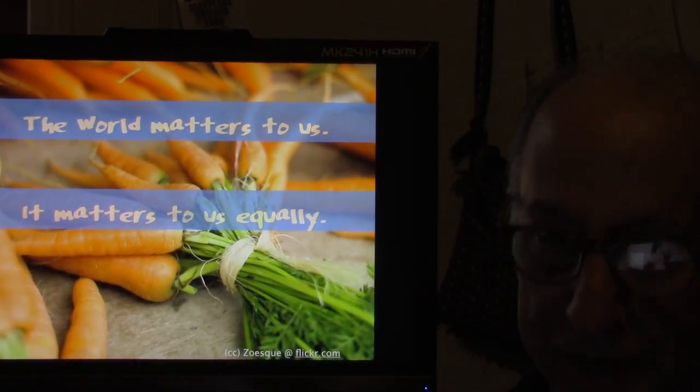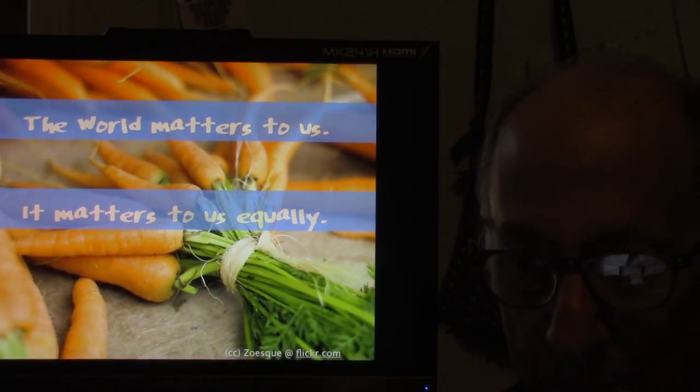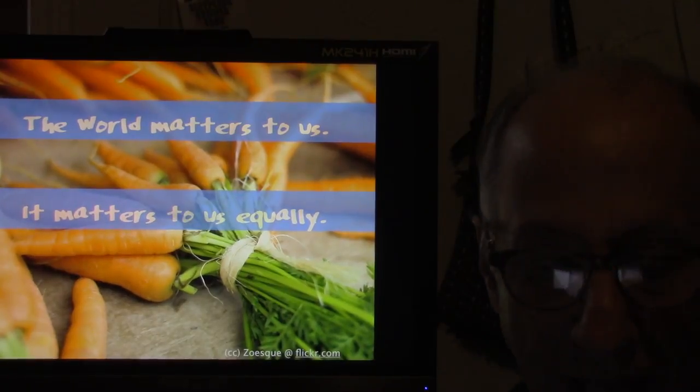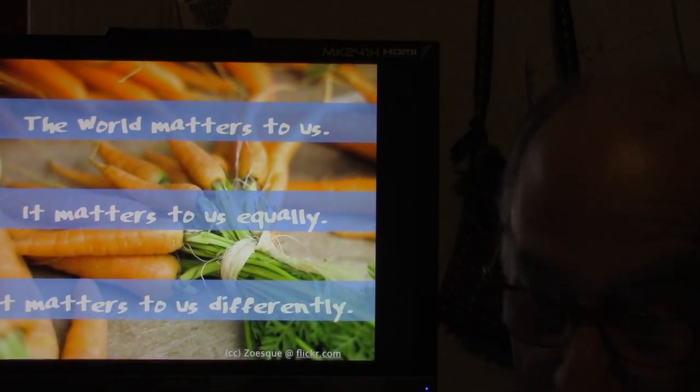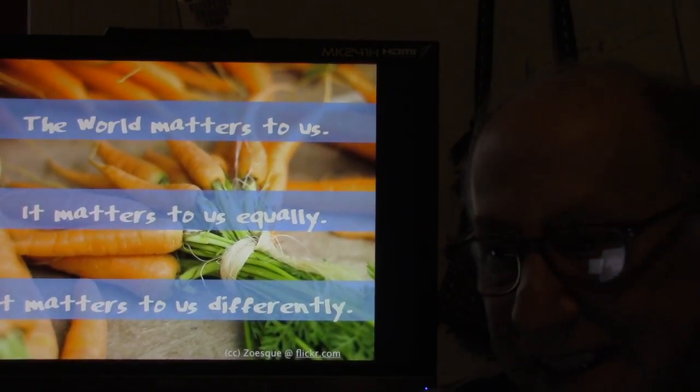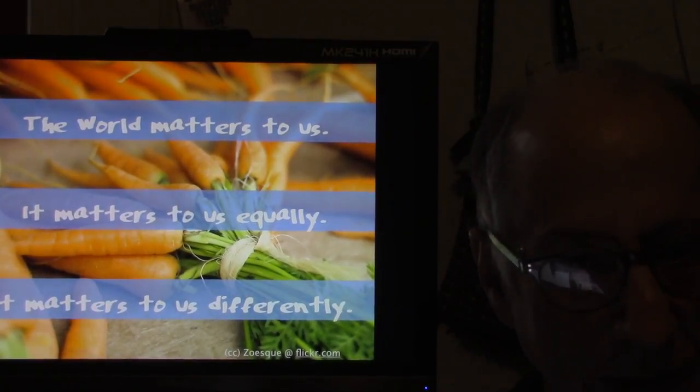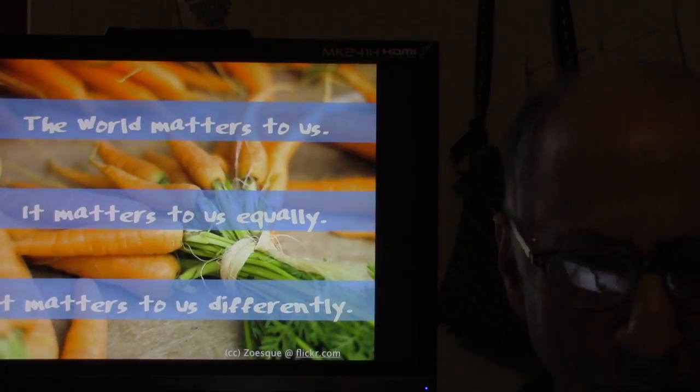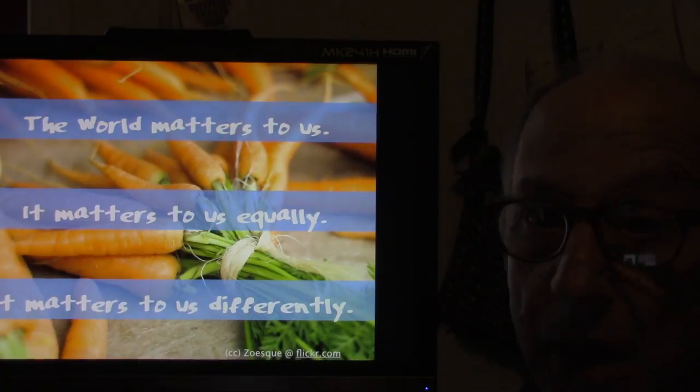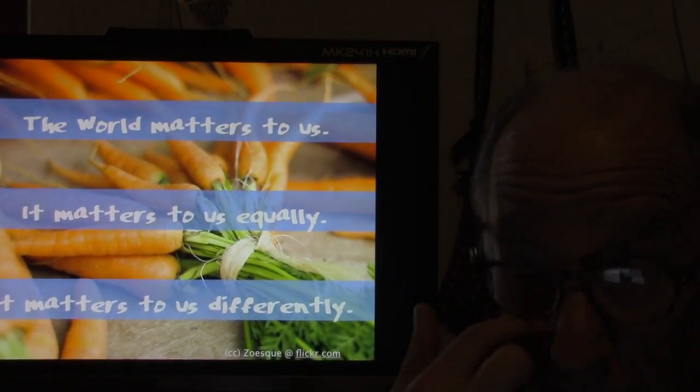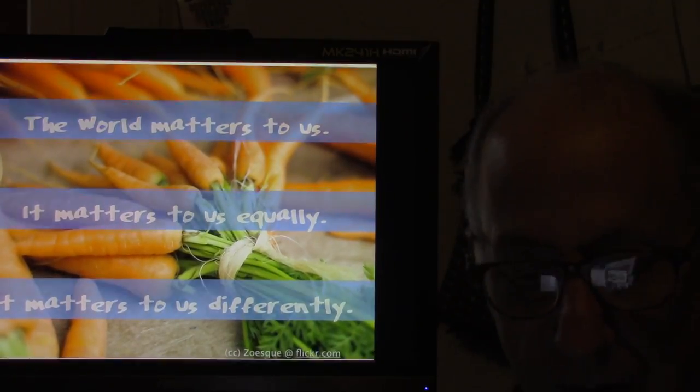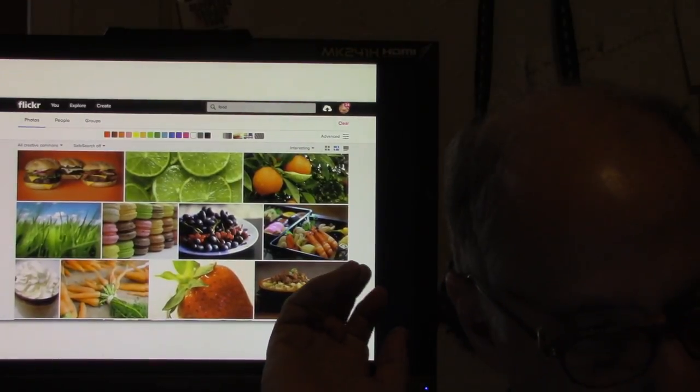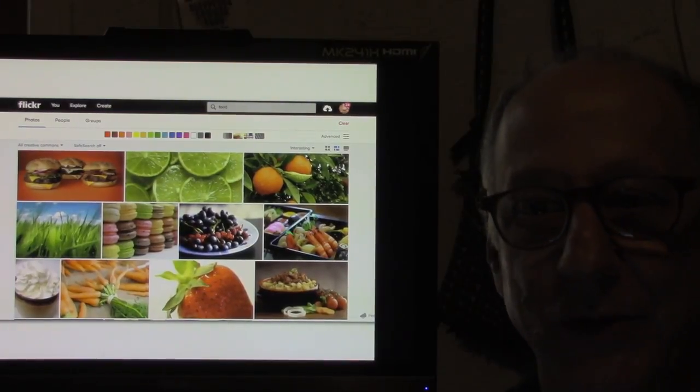In order to be a moral creature, you have to be cognizant of at least three things. The first is that the world matters to us. What happens to us matters to us. The world presents itself to us as something that is important, that we care about. There is that term again—that matters to us. Second, it matters to us equally. The world matters equally to the boy being shoved up the chimney as it does to the aristocrat sitting in his lounge drinking the sherry. It matters equally to us. And it matters to us differently, which is the flourishing idea. If you lack any of these three, then you are a moral monster, you're a sociopath, you're a narcissist. Everybody in this room accepts these three one way or another. This is exactly the world that the internet presents to us—a world in which everybody gets to express what matters to them in a linked environment.